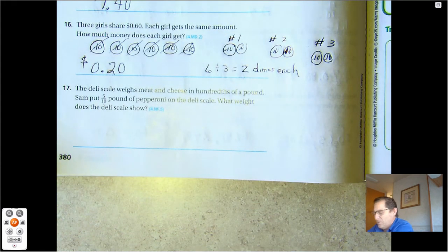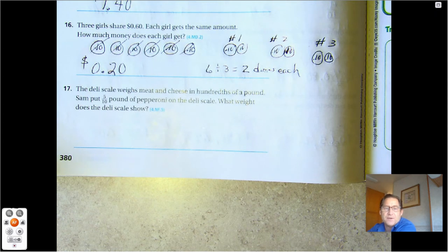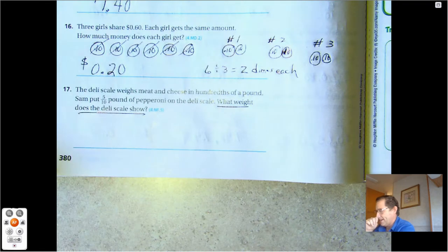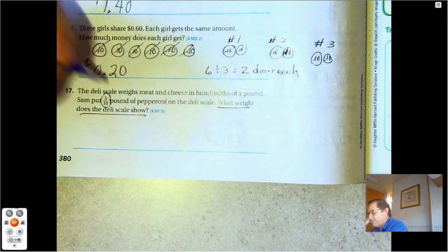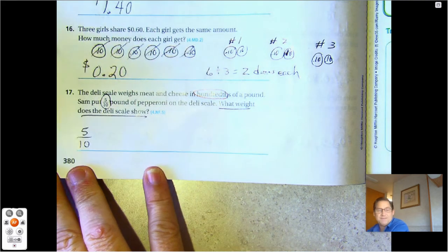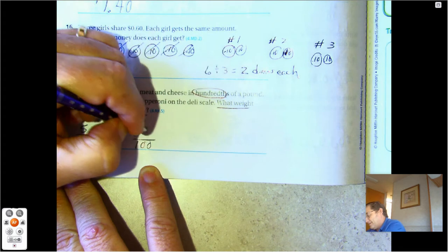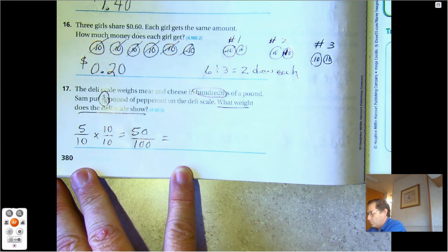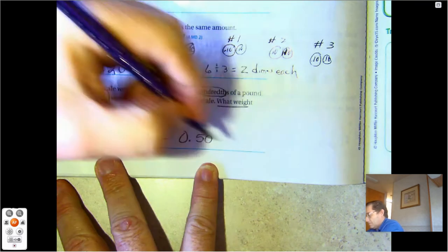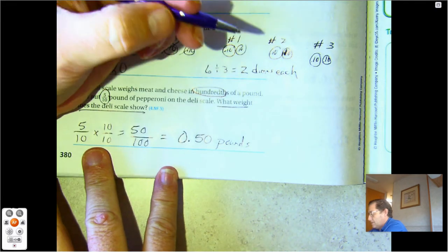And seventeen. The deli scale weighs meat and cheese in hundredths of a pound. Sam put five tenths pound of pepperoni on the deli scale. So what weight does the deli scale show? He put five tenths pound, but it measures it in hundredths. So all I have to do is change five tenths into hundredths by multiplying by ten over ten. Five times ten is fifty. So his scale shows fifty hundredths or 0.50 pounds. Half pound.